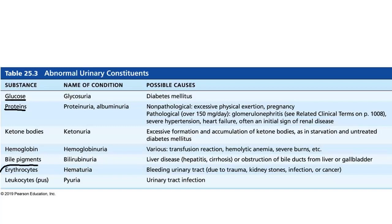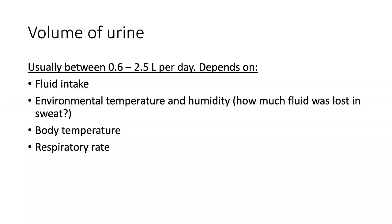We also shouldn't see blood cells — those are too big to get filtered. If we do see the presence of blood cells, then we're wondering why. As far as the volume of urine, that really depends on how much fluid intake you have, but it's usually anywhere between a little over half a liter to two and a half liters per day, depending on how much fluid you're taking in and how much fluid you're losing through other means.